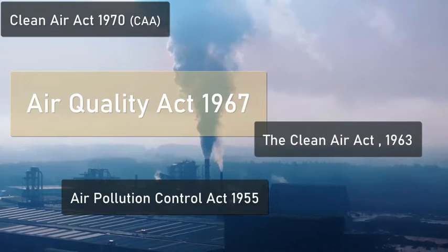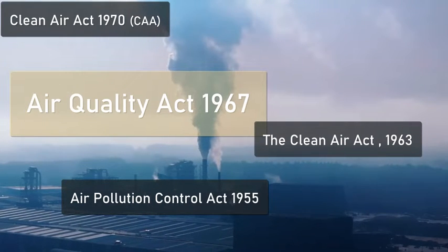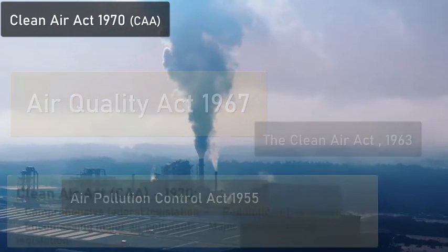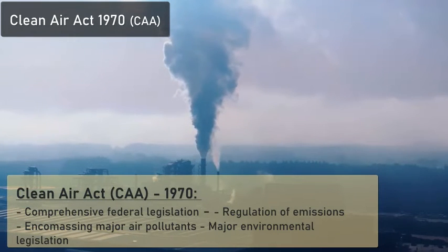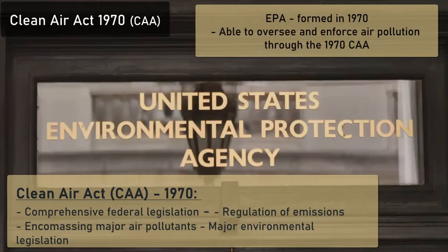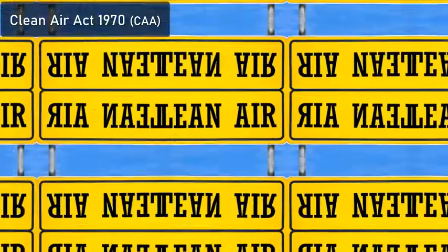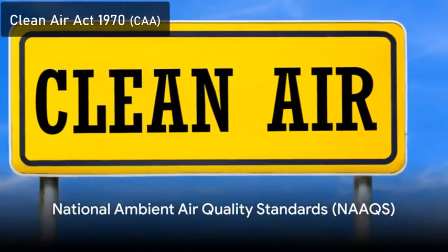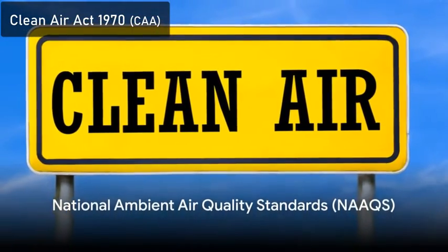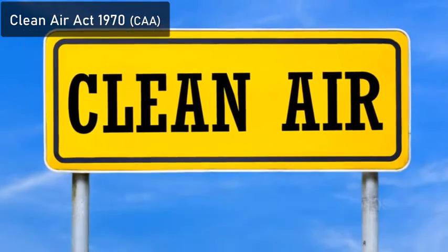The Clean Air Act of 1970, which is our focus of this video, is where we started to get more strict standards and to isolate both primary and secondary pollutants, and look at six main air pollutants and try to curb and reduce their emissions across the country, both from stationary and mobile sources.